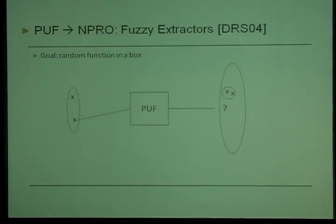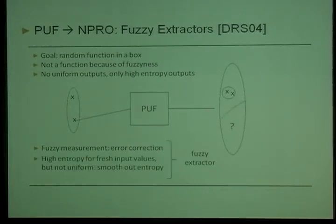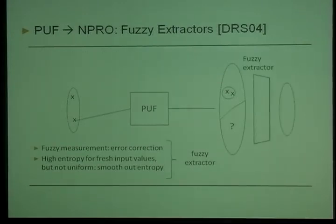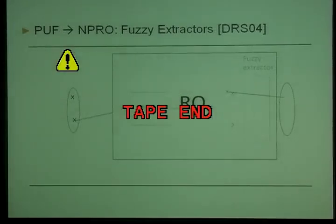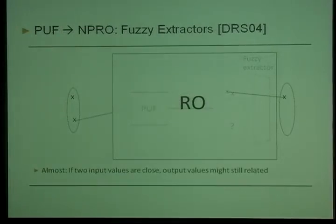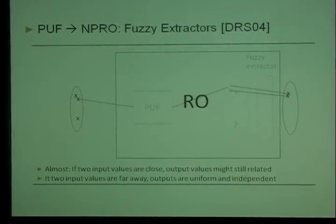A PUF is not a function because the measurement is fuzzy, and also you get high-entropy but not uniform outputs. That is where fuzzy extractors come in — they perform error correction and smooth out the entropy simultaneously. Putting a PUF together with a fuzzy extractor gives something almost like a random function in a box, with a subtlety: if two input values are close, you might get close outputs, but if inputs are far apart, you are fine.